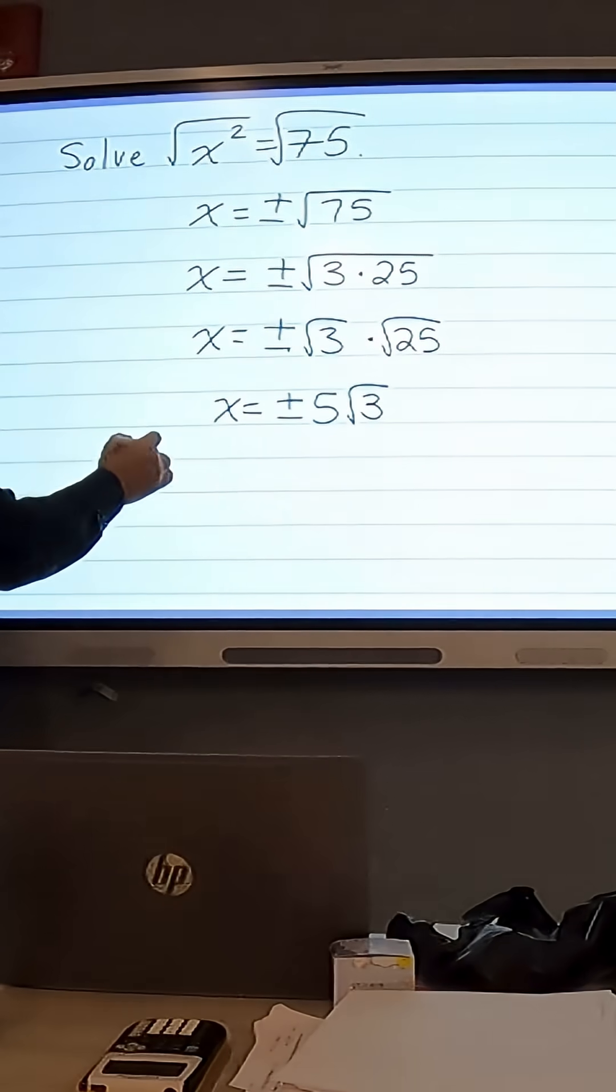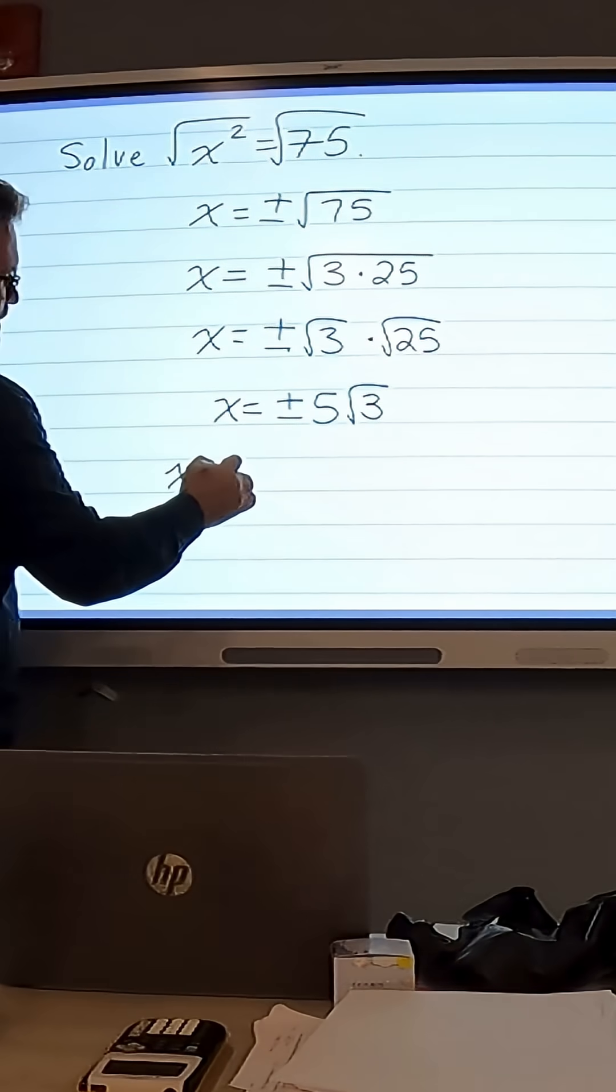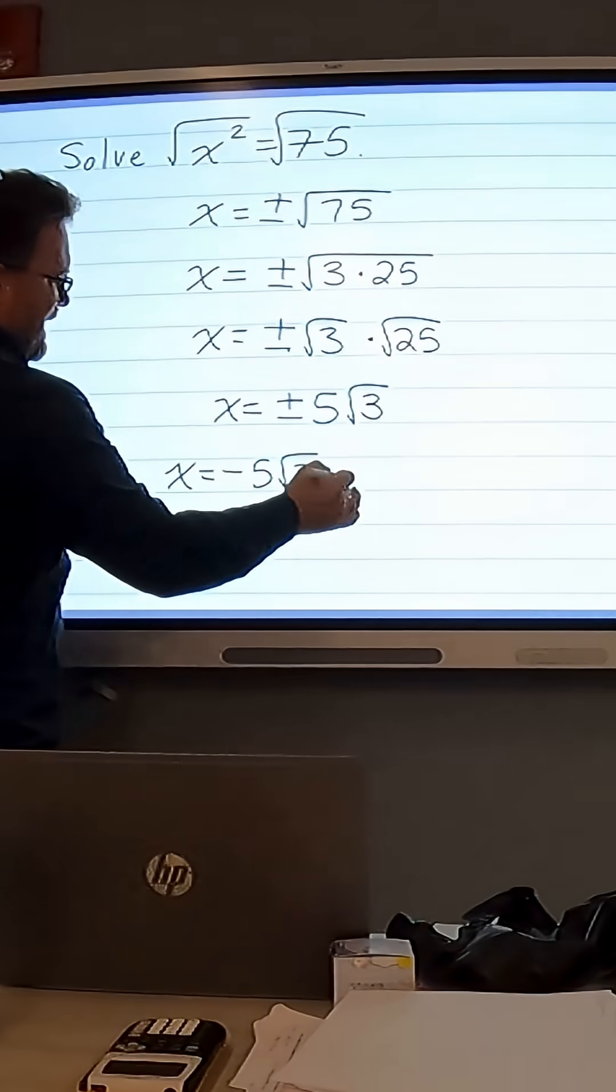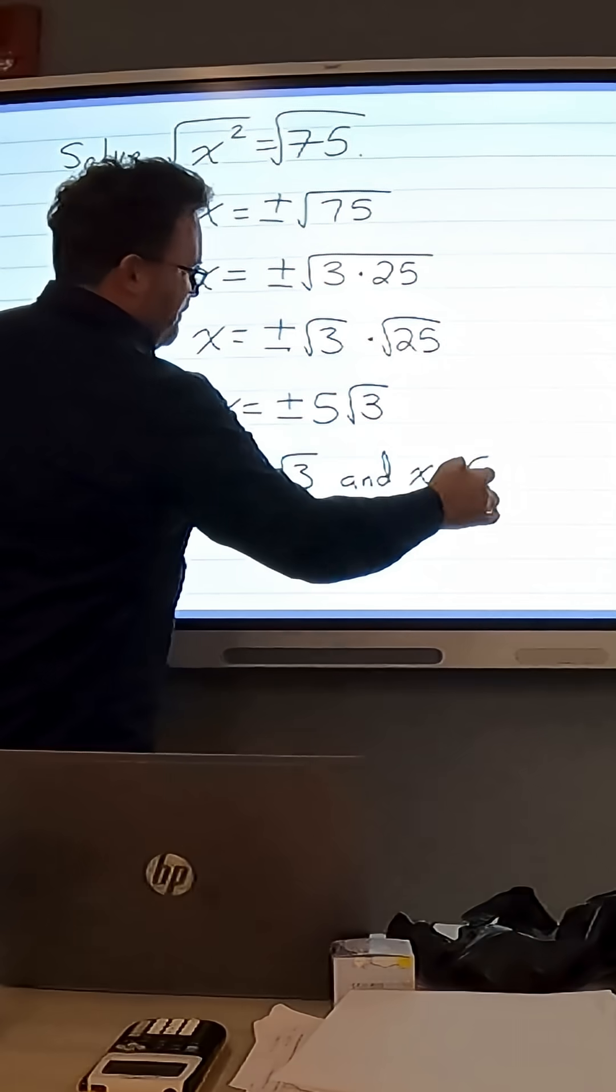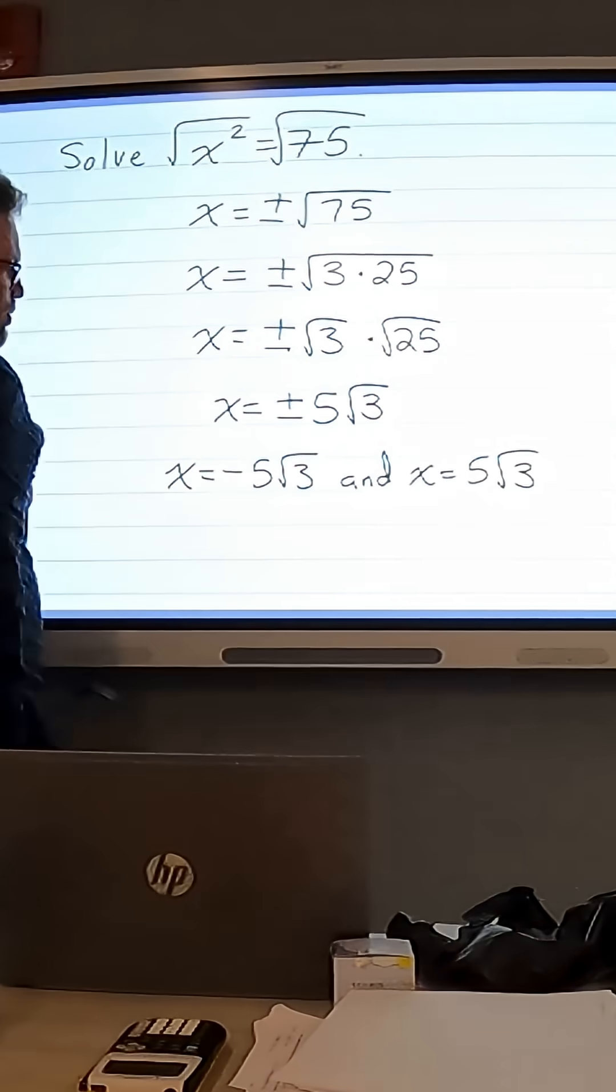So our two solutions for this problem are x equals negative 5 times the square root of 3, and x equals positive 5 times the square root of 3.